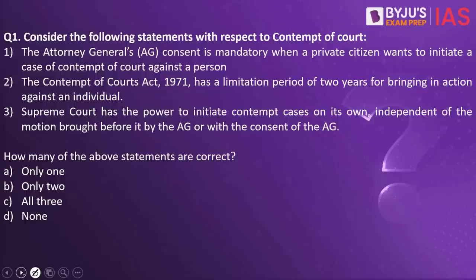Consider the following statements with respect to contempt of court. The Attorney General's consent is mandatory when a private citizen wants to initiate a case of contempt of court against a person. The Contempt of Courts Act of 1971 has a limitation period of two years for bringing action against an individual. The Supreme Court has the power to initiate contempt cases on its own, independent of a motion brought before it by the AG or with the consent of the AG. How many of the above statements are correct?